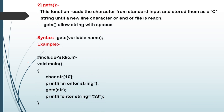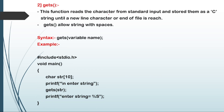The second function is gets. The gets function reads characters from standard input and stores them as a C string until a newline character or end of file is reached. Unlike scanf, the gets function allows strings with spaces. The syntax is: gets(variable_name);